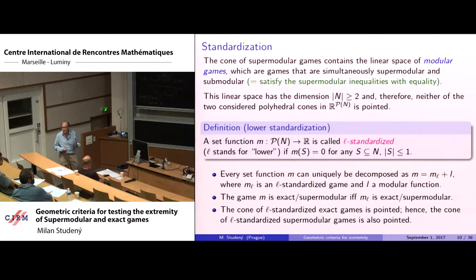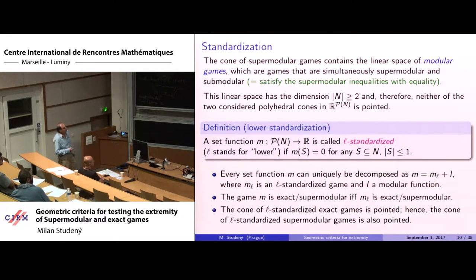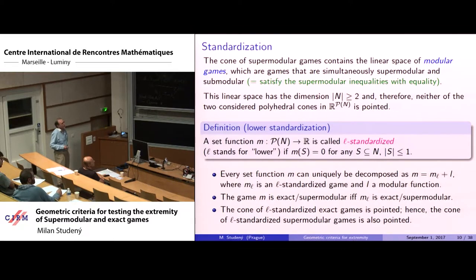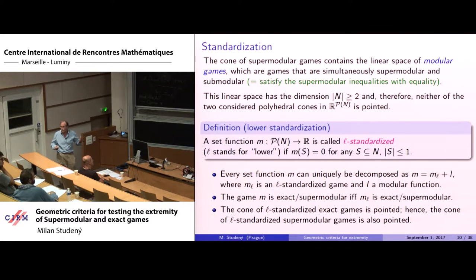In order to talk about extreme rays, we need to cut the cones by a suitable subspace. A set function is lower standardized if its values for singletons and the empty set are zero. Every set function can be uniquely decomposed into a lower part and a modular part, and it is exact and supermodular if and only if the same holds for the lower part. This cone is pointed, so we can talk about extreme rays.